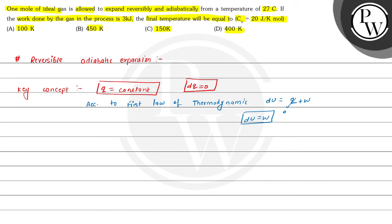DU is the change in internal energy. At constant volume, the change in internal energy is equals to N·CV·DT, where CV is the heat capacity at constant volume. So we can write DU is equals to N·CV·DT, and since DU is equals to W, we can write W as well.